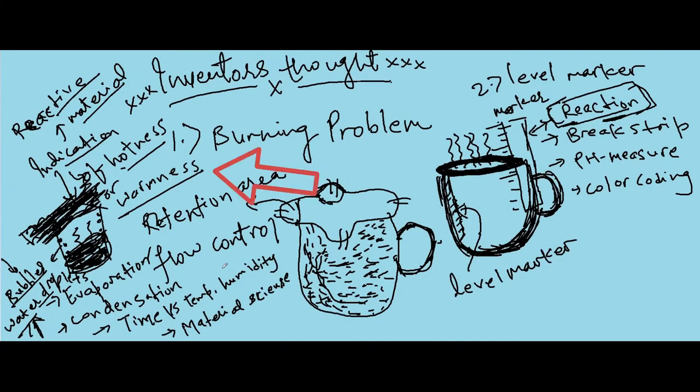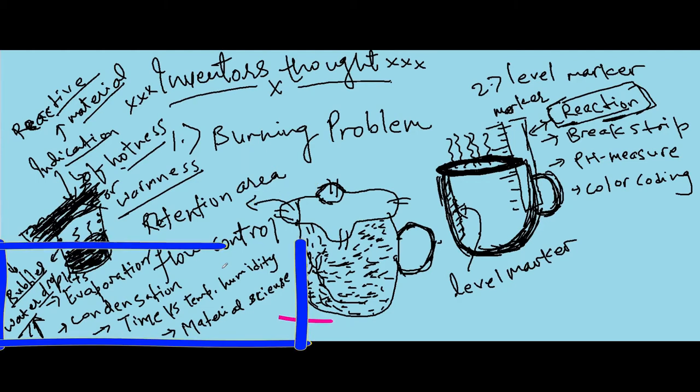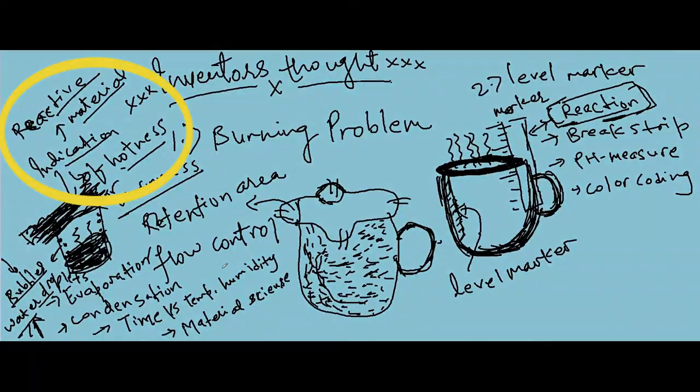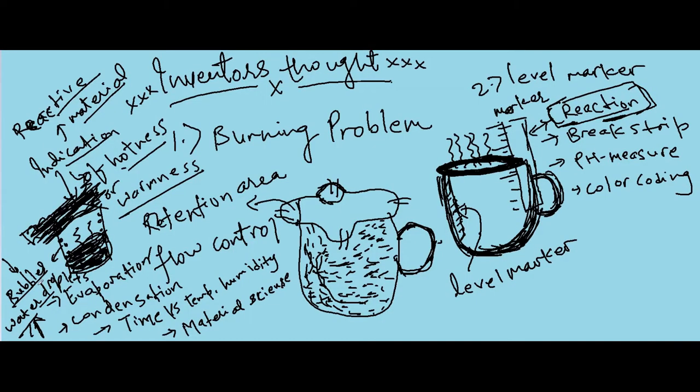Using simple science, warmness of the drink can be understood. Domain knowledge and basic environmental and material science can solve this problem. Indicator of warmness can also be observed using level markers. Here we can use a reactive strip which changes color due to reaction of vapors with marker strip.